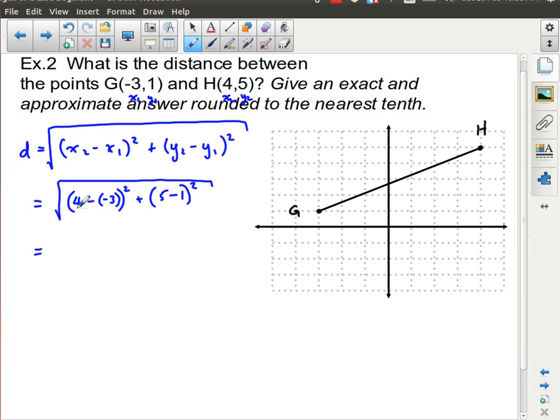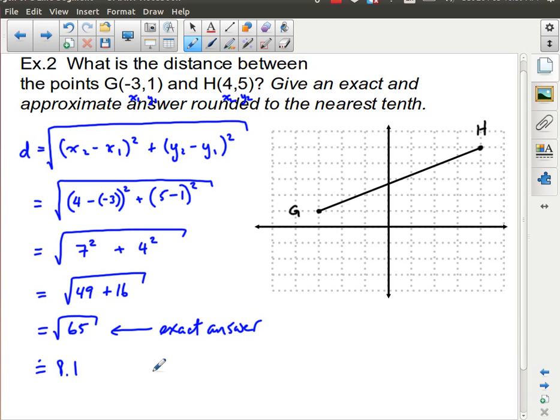Now this becomes an order of operations question. 4 minus negative 3, that's equal to 7. I have to square that, plus 5 minus 1 is 4, and I still have to square that, and I take the square root of all of that. 7 squared is 49, 4 squared is 16, taking the square root. 49 plus 16 is equal to 65, square root of that. And then it says it wants it rounded to the nearest tenth, so the square root of 65 is equal to 8.06, which rounds to 8.1. So this is my exact answer. And this is my rounded.